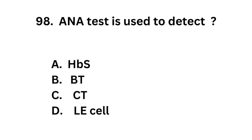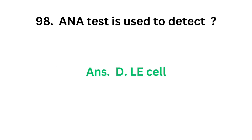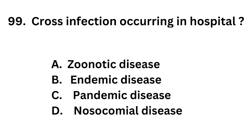Question number 98. ANA test — Anti-nuclear antibody test — is used to detect: Option A: HBsAg. Option B: BT (bleeding time). Option C: CT (clotting time). Option D: LE cell. The correct answer is Option D, LE cell. ANA test is used to detect LE cell, which is present in systemic lupus erythematosus and autoimmune disease.